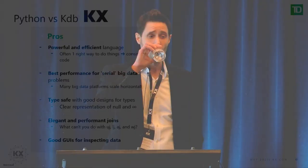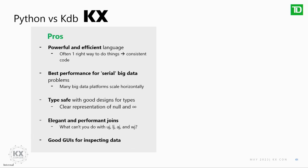Comparing this to KDB: KDB is super powerful and efficient. Generally there's one, more or less, way to do things — I very much like that from a consistency point of view. KDB is the best performance for what I call serial big data problems — problems that most big data solutions don't really cater for: you've got a very long series of data and need to do a big operation on it, i.e., a time series database. It's type safe. And I think the single thing that stands out for me most about KDB are the joins — they're elegant, performant, and very intuitive.